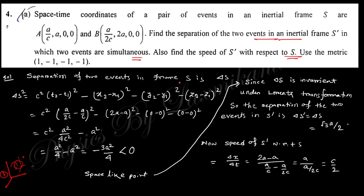Using the metric (+1, -1, -1, -1), the separation in frame S is delta s, where delta s squared equals c squared times (t1 minus t2) squared minus the spatial terms, which comes out negative — this is a space-like interval. Since the spacetime separation delta s is invariant under the Lorentz transformation, the separation in S prime is delta s prime equal to delta s, which equals root(3) a over 2.